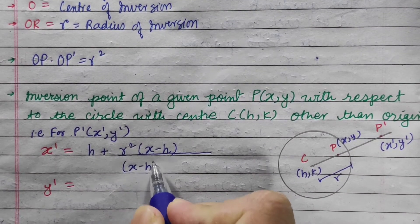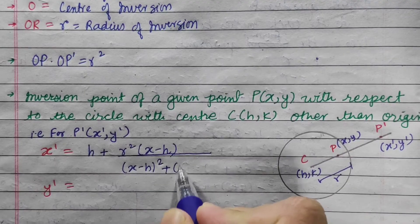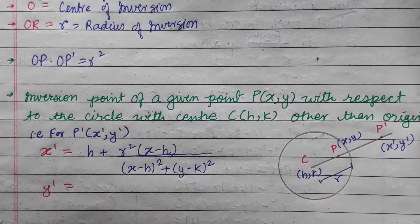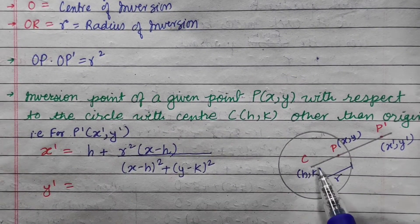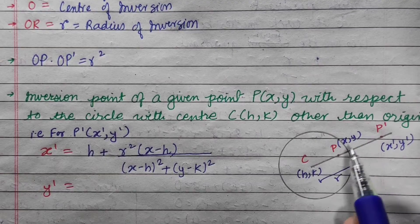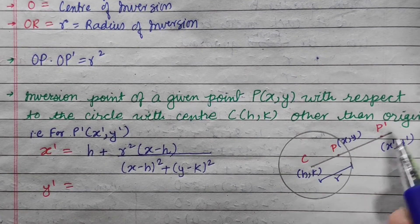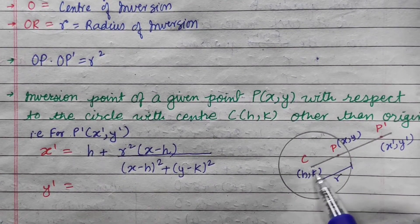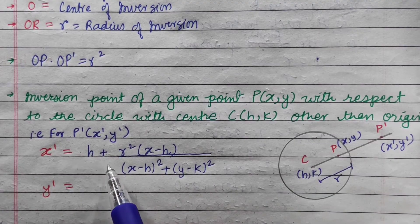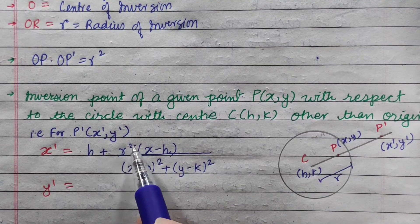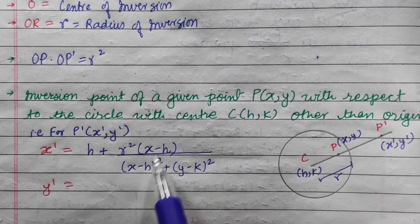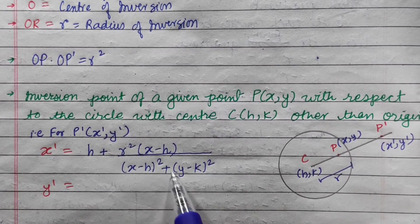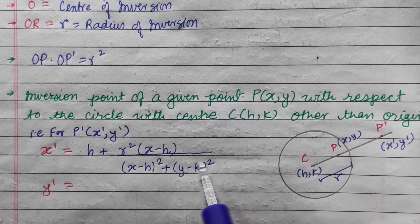The circle equation is x minus h whole squared plus y minus k whole squared. We have center coordinates h, k. The image x-coordinate is: center x-coordinate h plus r squared times (x minus h), divided by (x minus h) whole squared plus (y minus k) whole squared.